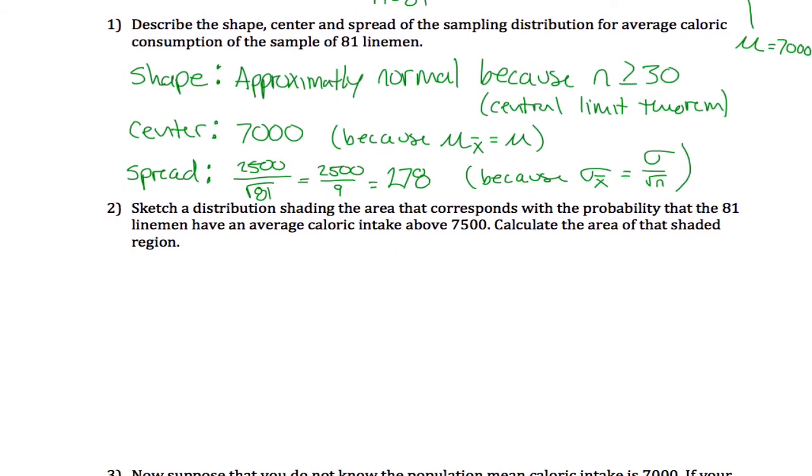Alright, and that's really the hard part. With that information, it becomes a problem we've seen before, a chapter 7 problem. We want to sketch a distribution. So I'll draw a picture. I'll make it approximately normal because I said the shape was approximately normal. I'll make the middle 7,000.